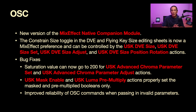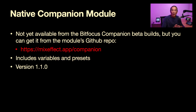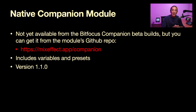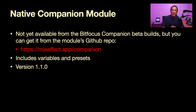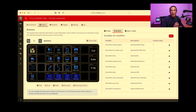OSC — there have been a few bug fixes and changes. There's a new version of the MixEffect Native Companion module written by Johnny Estias. The new version 1.1.0 supports all the features and actions in MixEffect 1.2.3 and 1.2.4. You can download the beta from mixeffect.app/companion. This hasn't been rolled into the BitFocus Companion beta builds yet, so you'll have to download a version for Windows, Intel Macs, and Apple Silicon Macs from Johnny's website. Go ahead and do that because there are some really great things in this release, including presets and variables.